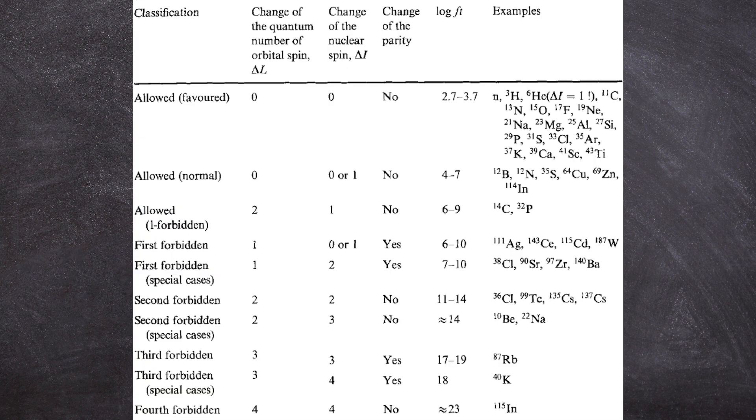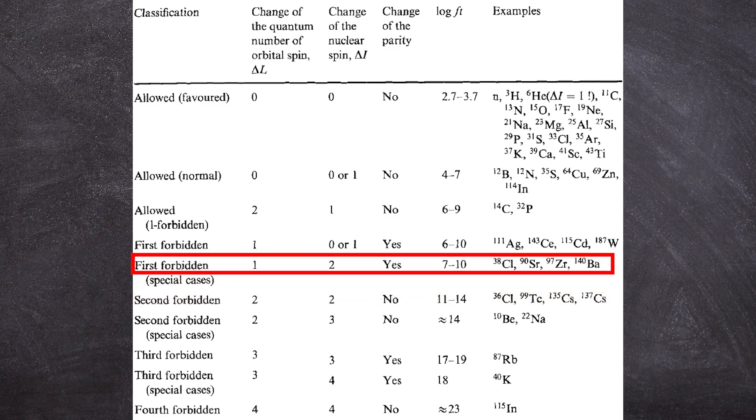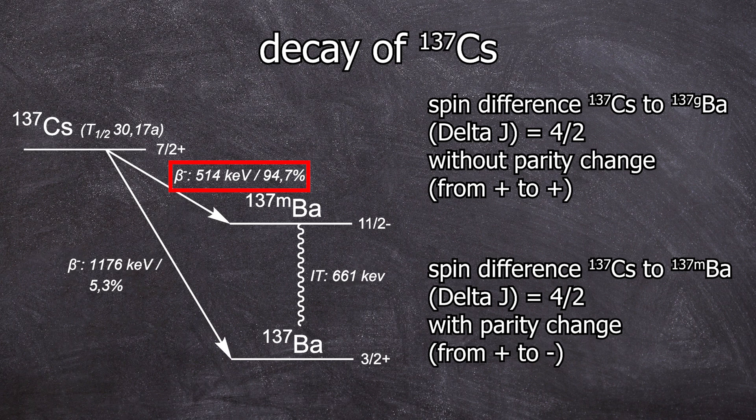A spin change of 4/2 without parity change is second forbidden, and with a parity change, it's first forbidden. This is why the formation of barium-137M is favored over the ground state. There was a lot of quantum mechanical blah, but as I said, it was only for those who are particularly interested in this topic.